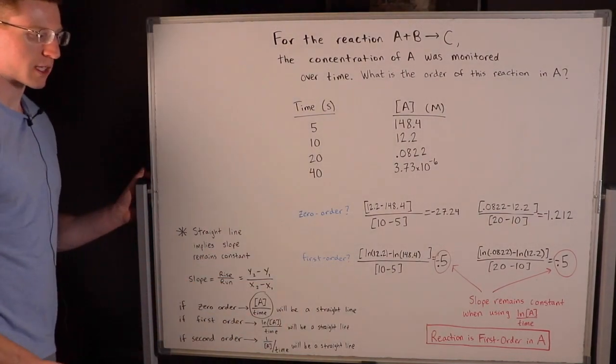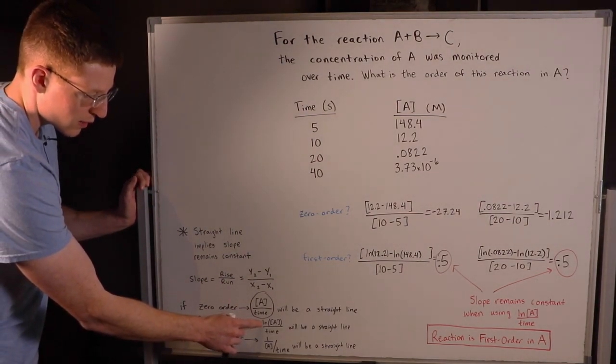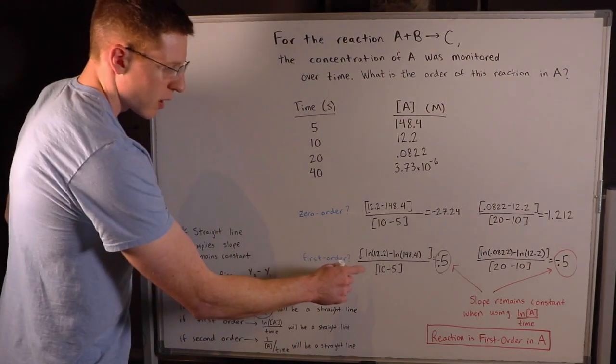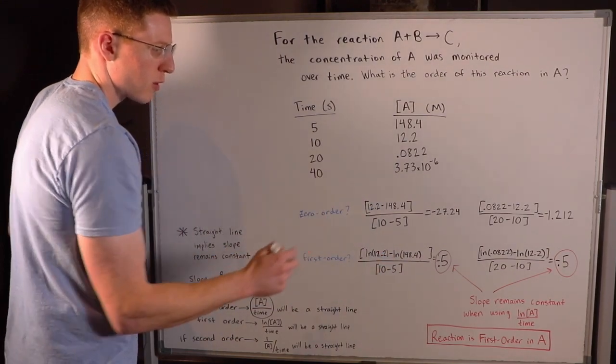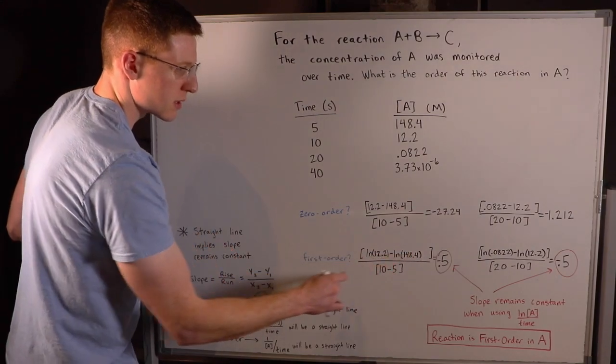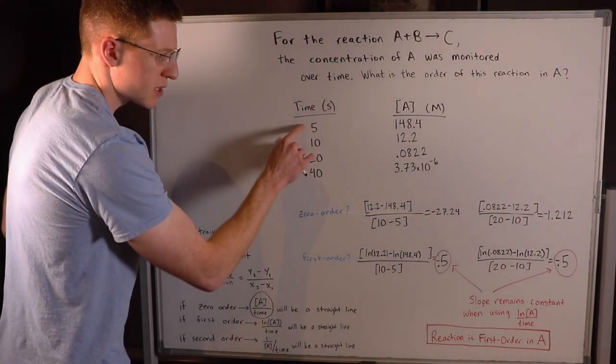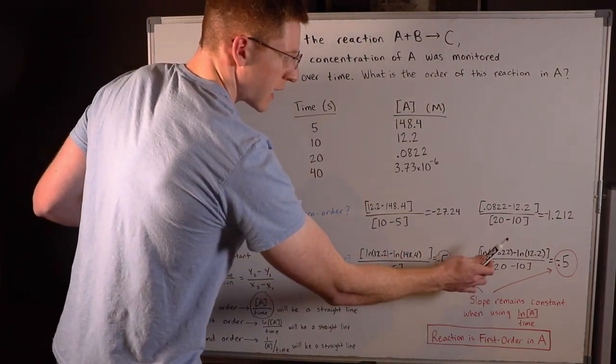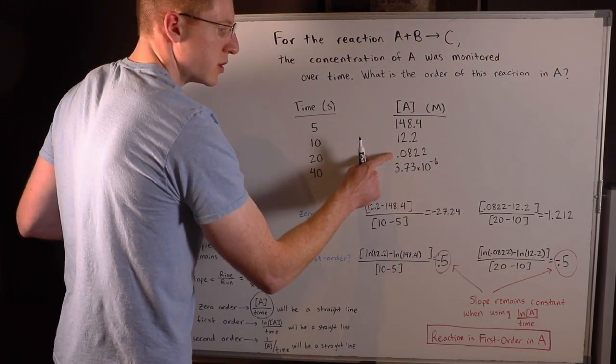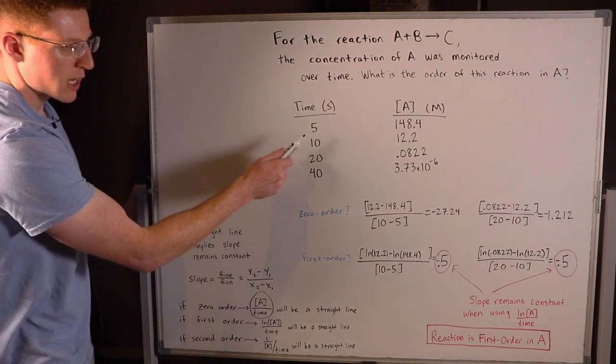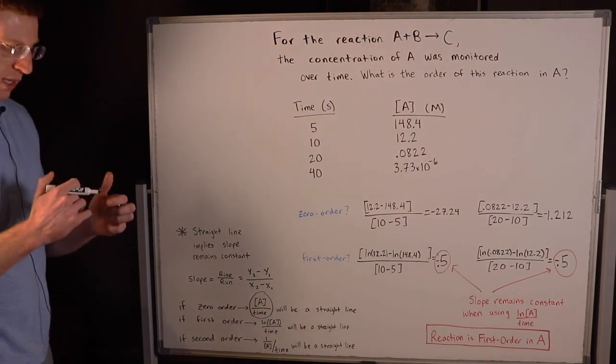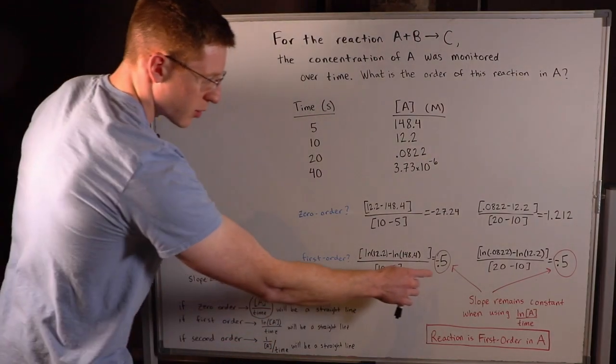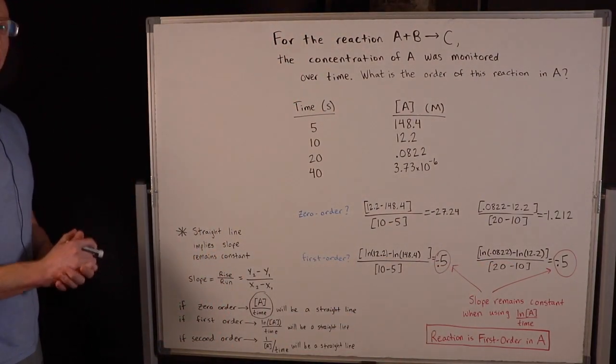So then I went on to test whether it was first-order with respect to A. If it's first-order, then the natural log of the concentration of A over time will plot a straight line. So I took the natural log of 12.2 minus the natural log of 148.4 over 10 minus 5, and I got a slope of -0.5. I then tested the slope between points 2 and 3, taking the natural log: ln(0.0822) - ln(12.2) over 20 - 10, and I got the same slope. That was enough evidence to say that this reaction must be first-order in A, because plotting the natural log of the concentration of A over time produced constant slope from point to point. Thus, it must be plotting a straight line.